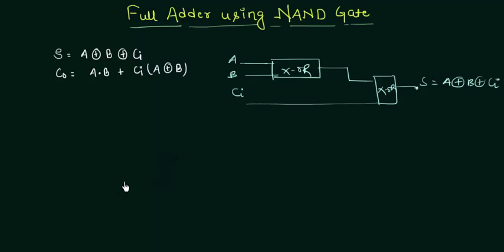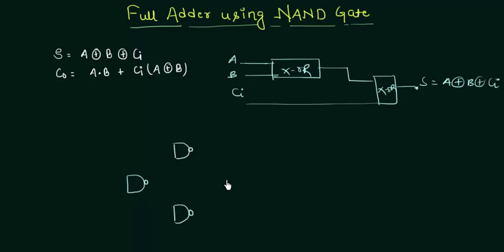We require 4 NAND gates for the XOR implementation. So let's make it: this is our first NAND gate, this is our second NAND gate, this is our third NAND gate, and this is our fourth NAND gate.